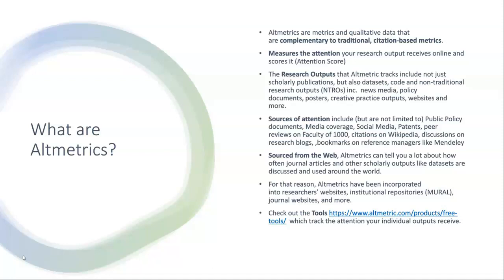So what are altmetrics? Altmetrics are metrics and qualitative data that are complementary to traditional citation-based metrics, like every kind of metrics you might find in the Scopus or Web of Science database. They measure the attention your research output receives online and give you an attention score. They track research outputs, which includes scholarly publications, but also datasets, code, and non-traditional research outputs, including news media policy documents, posters, creative practice outputs, websites, and more.